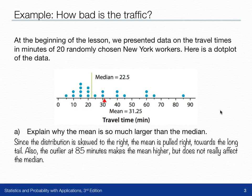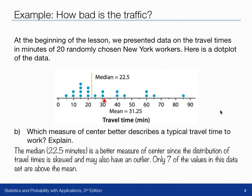Part B of the question asks us to explain which measure of center is a better description of a typical travel time to work. And in this case, it's the median.